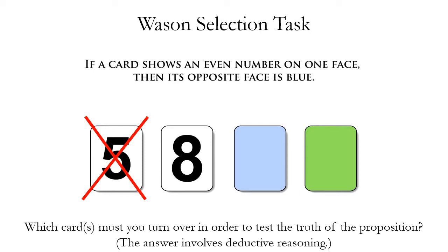You might be surprised, but the proposition does not say anything about odd numbered cards specifically — it's about even numbered cards. It says if a card shows an even number on one face, then its opposite face is blue. The proposition does not say that if the card has an odd number, then its opposite face will not be blue. That would be a different proposition that's not logically equivalent to it.